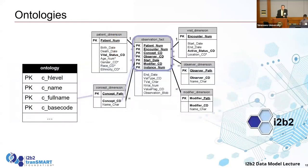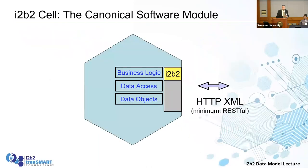These operate through the concept dimension. There's a humanly readable table called the ontology table that points into the concept dimension, which points into the fact table. It's how you choose concepts you want to query — for example, how many patients have diabetes? You go through what is in the concept dimension and then look up how many patients there are with the diabetes concept in the fact table.